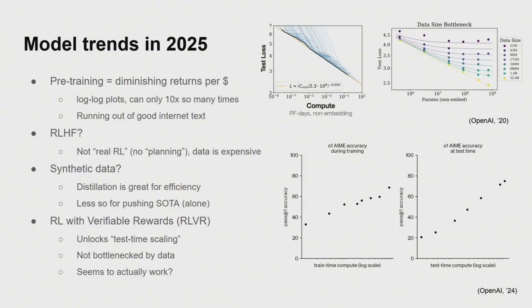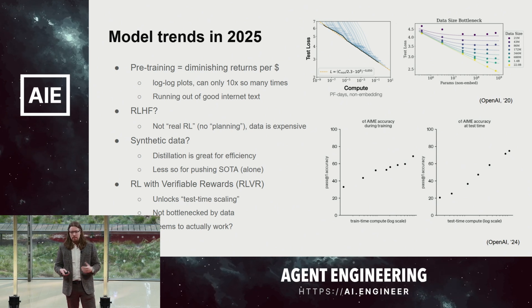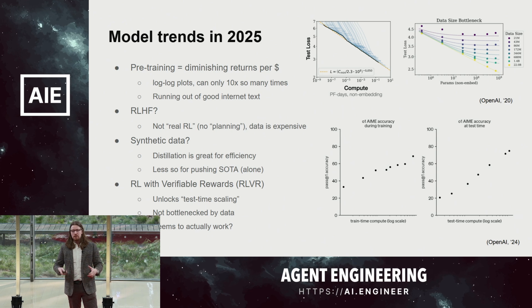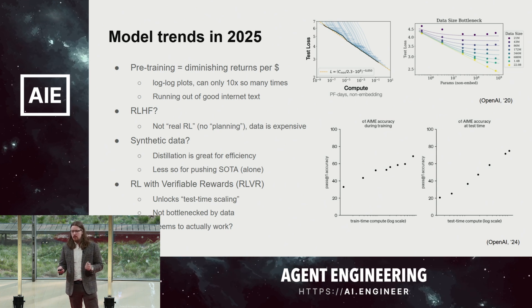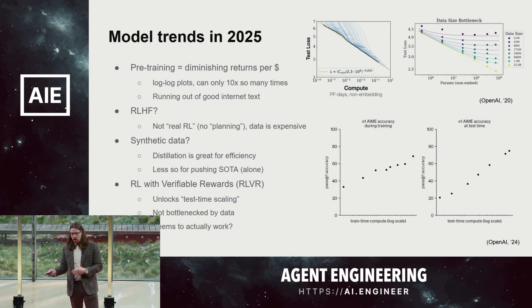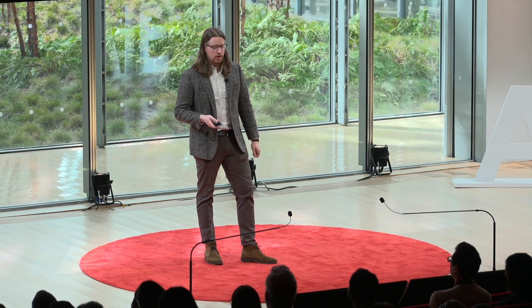In terms of model trends, pre-training seems to be having diminishing returns to capital at least. We're still seeing loss go down, but it does feel like we need new tricks. Reinforcement learning from human feedback is great for making friendly chatbots, but it doesn't really seem to be continually pushing us at the frontier of smarter and smarter models. Synthetic data is great for distilling larger models down into smaller performant ones, but on its own it doesn't seem to unlock massive capability gains unless you throw in verification, rejection sampling, or similar techniques. That really takes us to the world of reinforcement learning, which seems to be the trick that unlocked test-time scaling for o1-style models and R1 — not bottlenecked by needing manually curated human data, and it does seem to actually work.